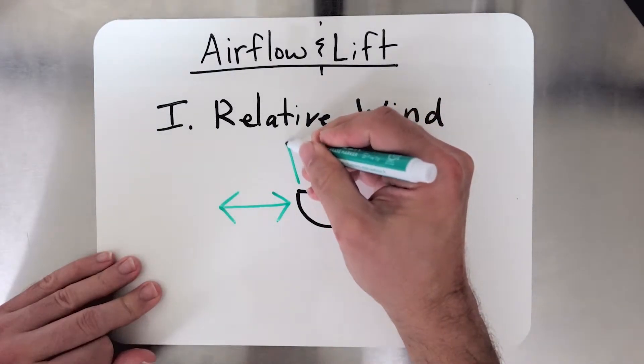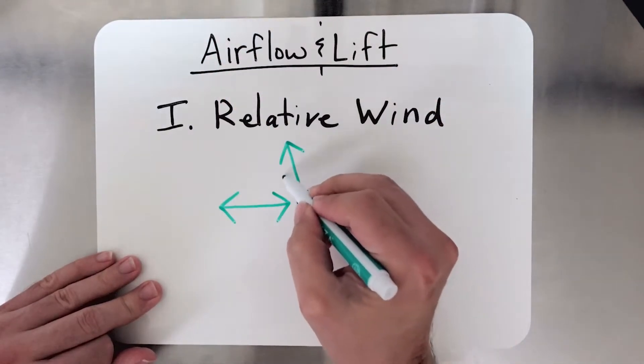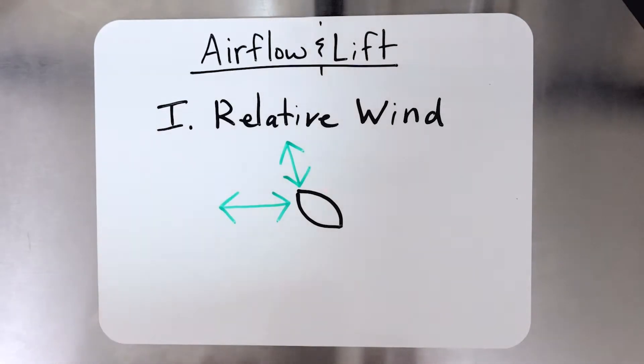If the airfoil is moving in this direction, well, you guessed it, the relative wind is opposite in this direction. That's pretty straightforward.